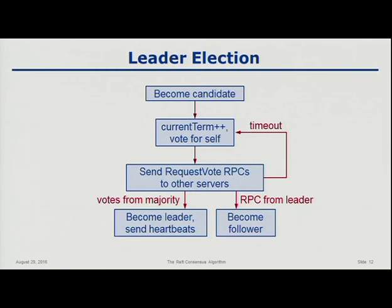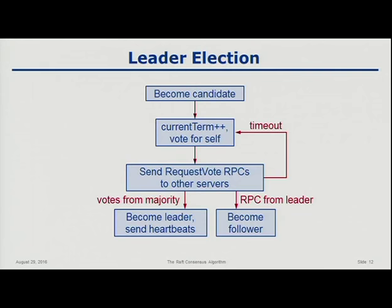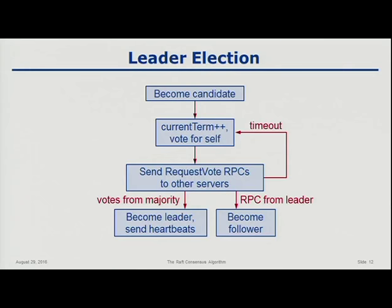The second possibility is that somebody else timed out and became leader first — when we get a heartbeat from them saying 'I'm leader,' we instantly believe them, step down, go back to being a follower, and listen to orders from that leader. The third possibility is a split vote where nobody gets enough votes. If a certain amount of time goes by and nobody has gotten a majority, the various machines timeout, start a new election, bump the term to the next term, and repeat the process until eventually somebody gets elected.